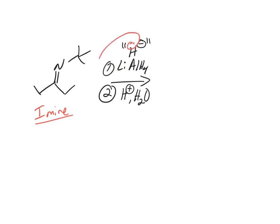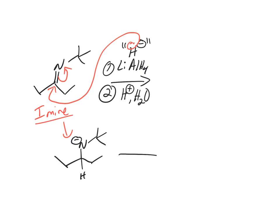A lone pair on hydrogen would react with the carbon of the imine. This is basic conditions — H minus is a basic condition — so the first step in basic conditions is always addition. This is an addition step, and it's forming a tetrahedral intermediate. You always ask yourself: are there any good leaving groups? Two carbons and a hydrogen — nope. So that means you're done; there's nothing else to add.